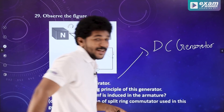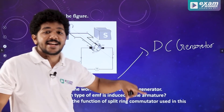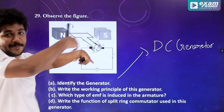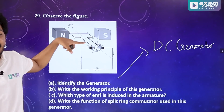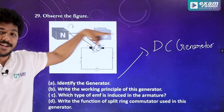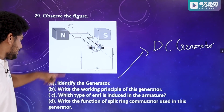We have discussed this live. The AC generator has slip rings, and the DC generator has a split ring. This is the split ring, so this is DC generator. The answer is DC generator.